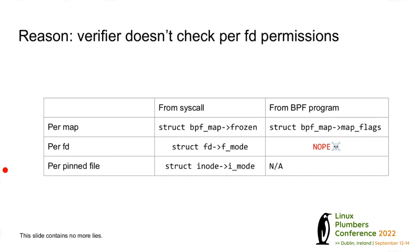The solution where bpf_obj_pin mirrors permissions only works if you also change what chmod does. The fundamental problem is that when you have the inode, you don't necessarily know which file descriptor it came from. The inode points at the map, not the file descriptor. The map only knows its frozen map flags — it doesn't know what the original file descriptor permissions were. So you can't determine from the inode whether the file is supposed to be read-only or read-write.